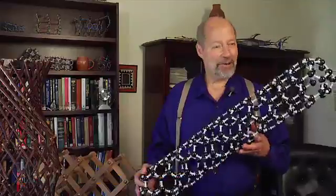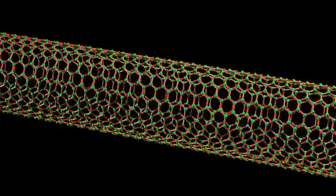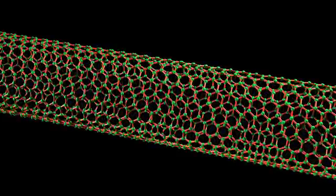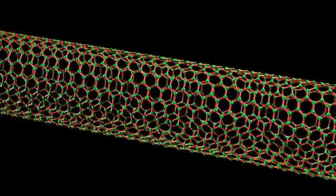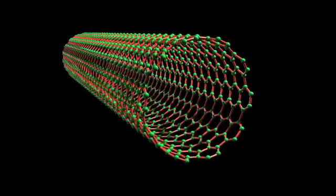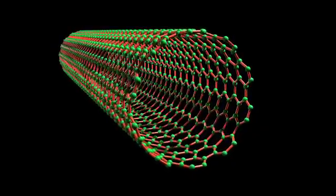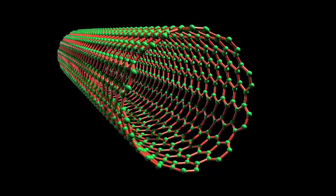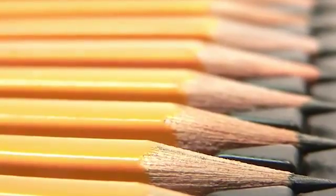Our new artificial muscles are based on carbon nanotubes. Carbon nanotubes are cylinders of carbon, and the particular type of carbon is the same type of carbon that's found in graphite, like in ordinary lead pencils.